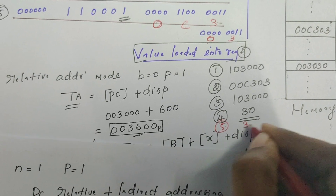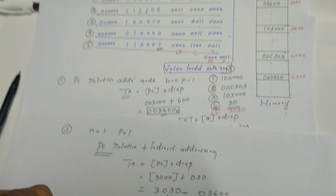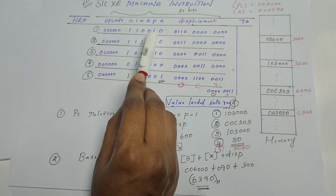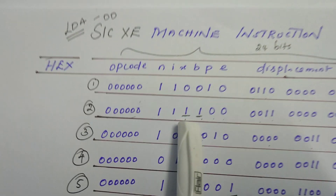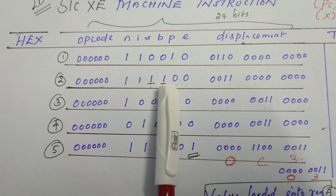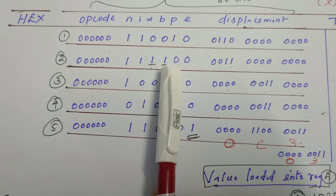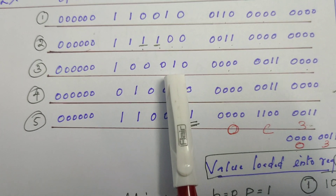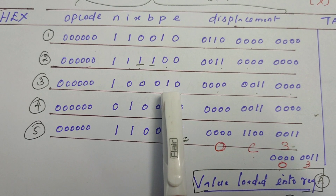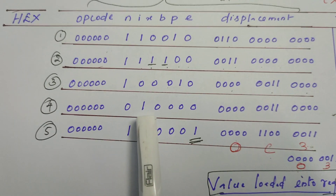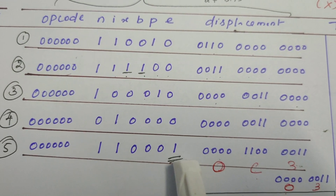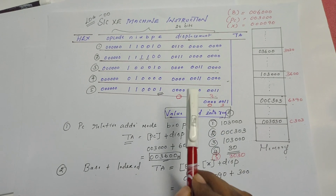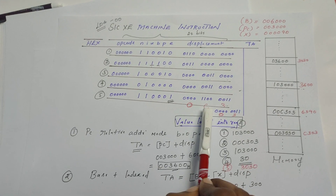With these examples, the addressing modes should be clear. To summarize: Example 1 — p=1, PC relative addressing mode. Example 2 — x=1 and b=1, base plus indexed addressing mode (n=i=1 indicates SIC XE architecture). Example 3 — p=1 and n=1, PC relative plus indirect addressing mode. Example 4 — only i=1, immediate addressing mode. Example 5 — e=1, format 4 instruction where the complete address is stored directly, so no calculation is needed.